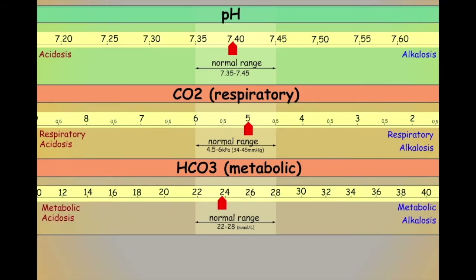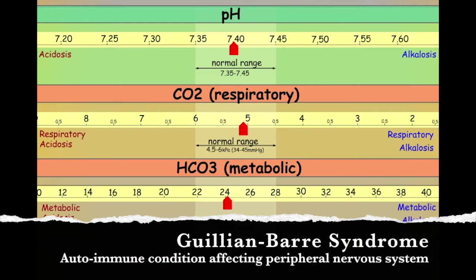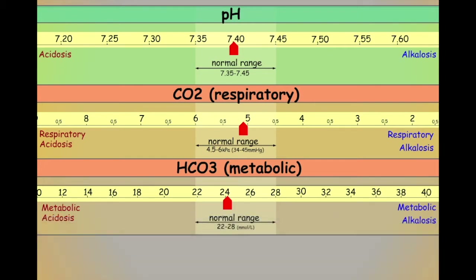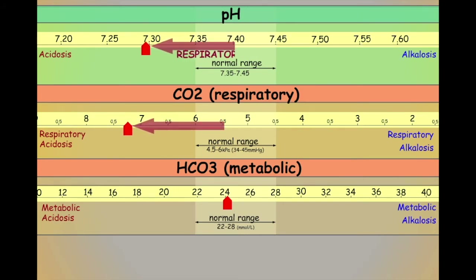Let's look at another example. Guillain-Barré syndrome is an autoimmune condition where the body's own immune system attacks and damages the body's nerves. In severe cases, nerves controlling the respiratory system can be affected and the sufferer's ability to clear carbon dioxide can be reduced, leading to a respiratory acidosis.